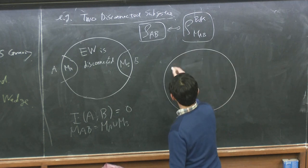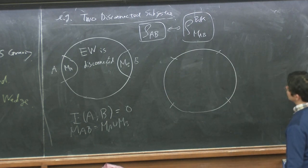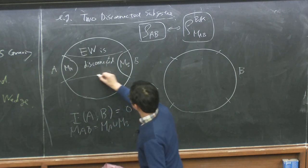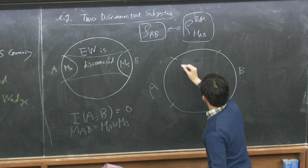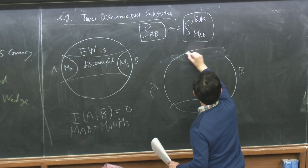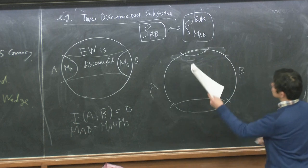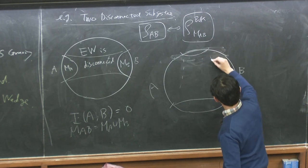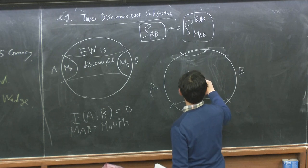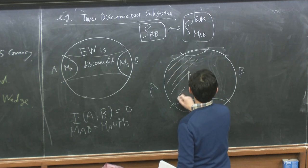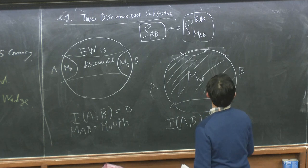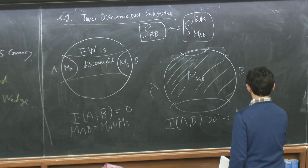If A and B are closer to each other, or larger, then the sum of the two individual surfaces becomes smaller than the connected surface. So the entanglement wedge M_{AB} turns out to be this connected region. When the mutual information I(A:B) is positive, then M_{AB} is connected. This is the more interesting case.